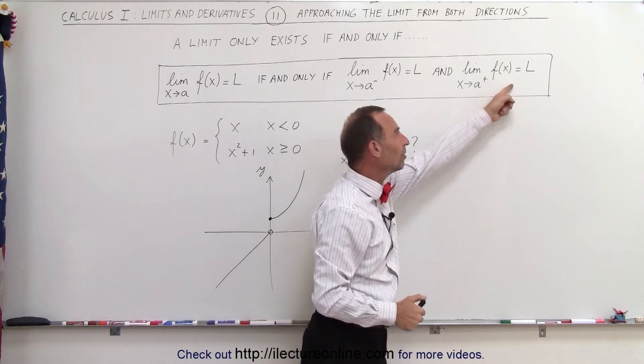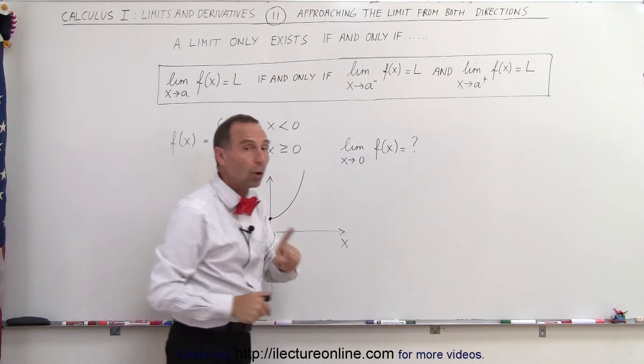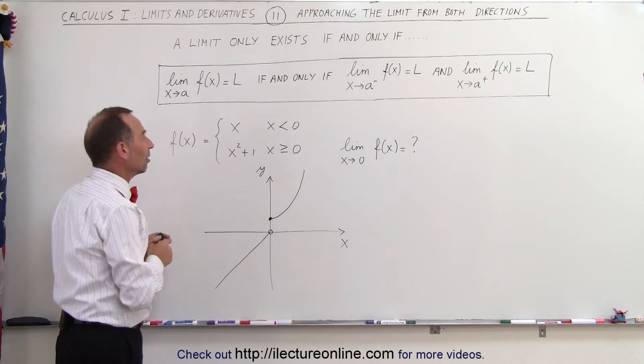If we get the same limit approaching the limit value for x from both directions, then, and only then, the limit exists.